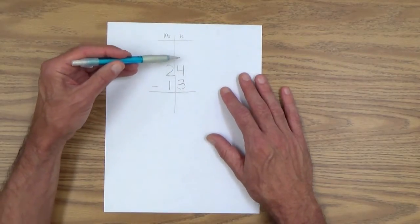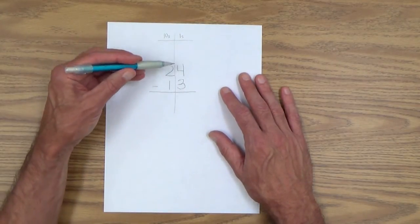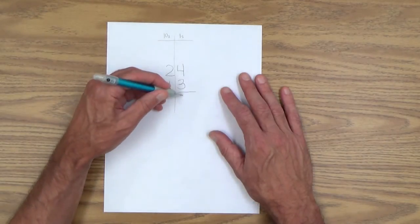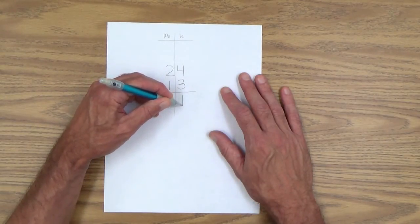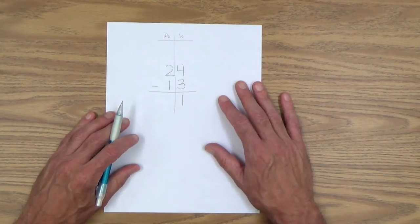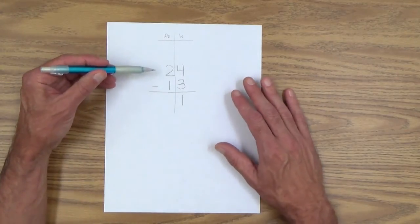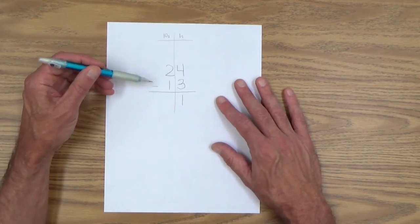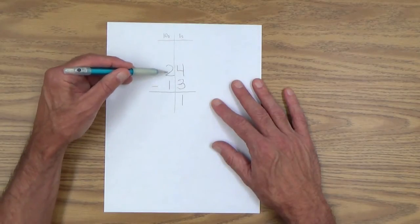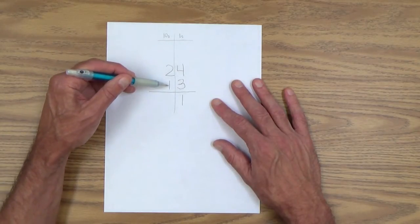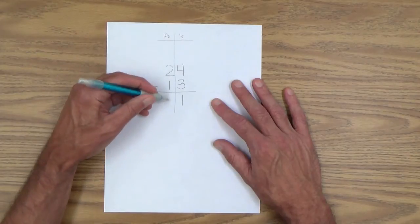So you say, well, let's subtract these numbers in the ones column. Four minus three, of course, is one. And then, of course, we move over to the tens column, two minus one, or two take away one. One is one.